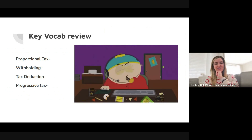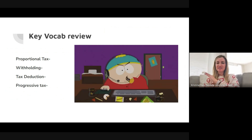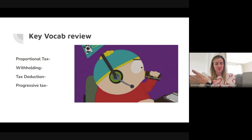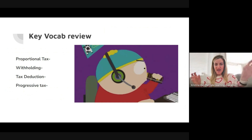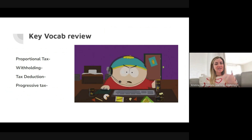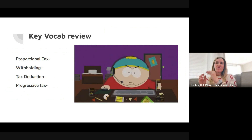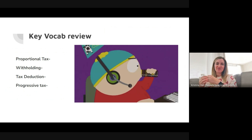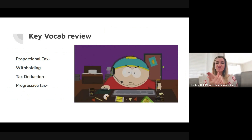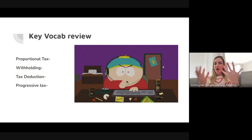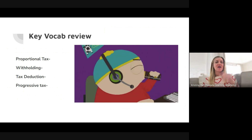There were four major vocab words we went over yesterday. Proportional tax is where everyone pays the same proportion — sales tax is a good example, it's the same percentage for everybody, like 8.25%. Withholding is when we get a job and a paycheck — they withhold the federal taxes from our paycheck before we ever get it. Tax deductions: when you file your taxes at the federal level, you're trying to find ways to save money. Tax deductions are ways you can save money, and they differ depending on your living situation, whether you have kids, marital status, type of job, and how much you make.